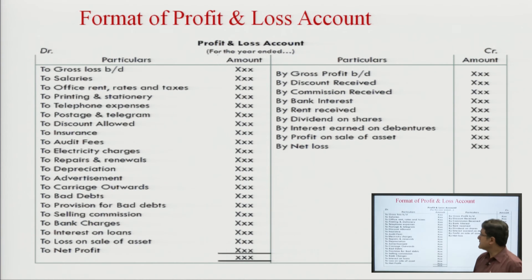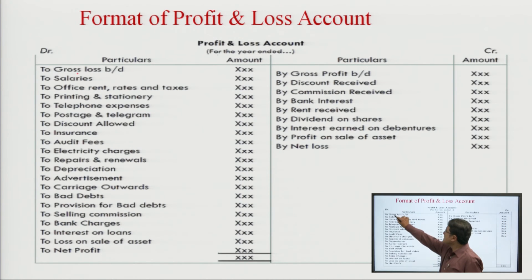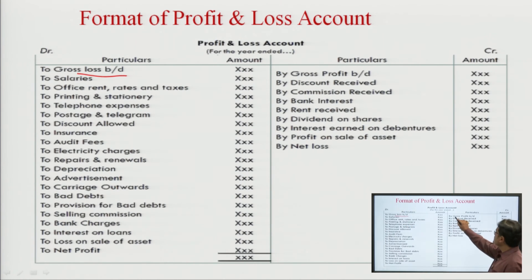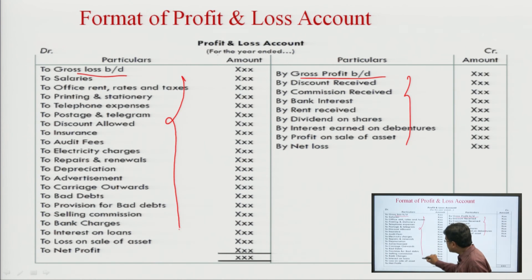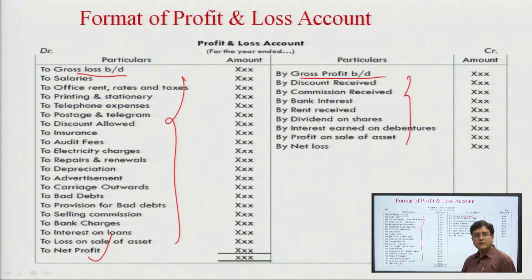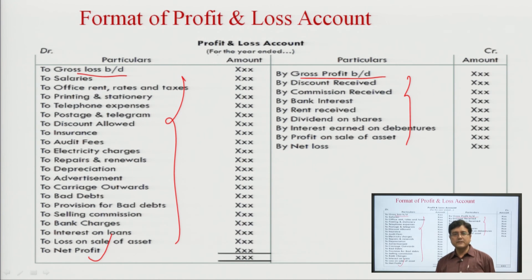Let us see the specimen of the profit and loss account. The gross loss appears on the debit side, or if there is a gross profit, it is transferred from the trading account to the credit side. We add all indirect incomes and subtract all indirect expenses, and finally we arrive at the net profit.